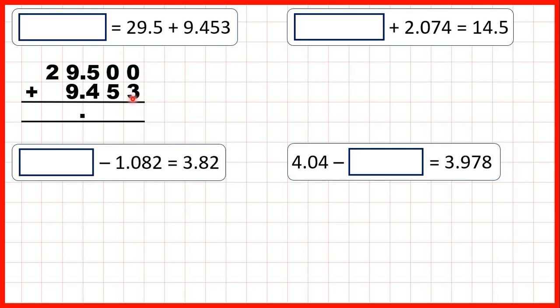0 plus 3 is 3, 0 plus 5 is 5, 5 plus 4 is 9, 9 plus 9 is 18, so 1 8, and 1 plus 2 is 3, so our answer is 38.953.